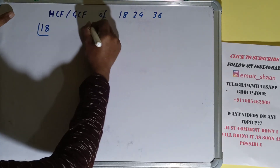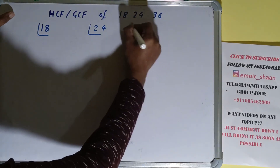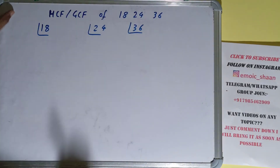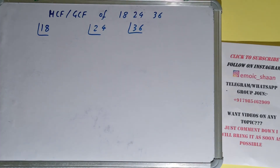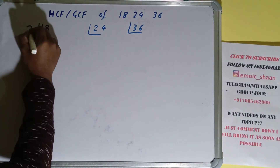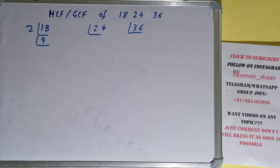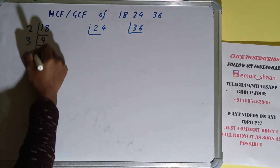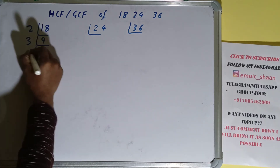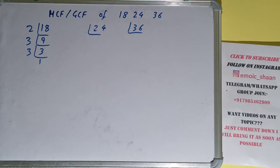We'll start with the number 18 and check with the lowest prime number, which is 2. Is 18 divisible by 2? Yes it is, and we'll have 9. Is 9 divisible by 2? No, so we check with the next lowest prime, 3. Is 9 divisible by 3? Yes, giving us 3. And 3 is again divisible by 3, giving us 1. We're done with 18.